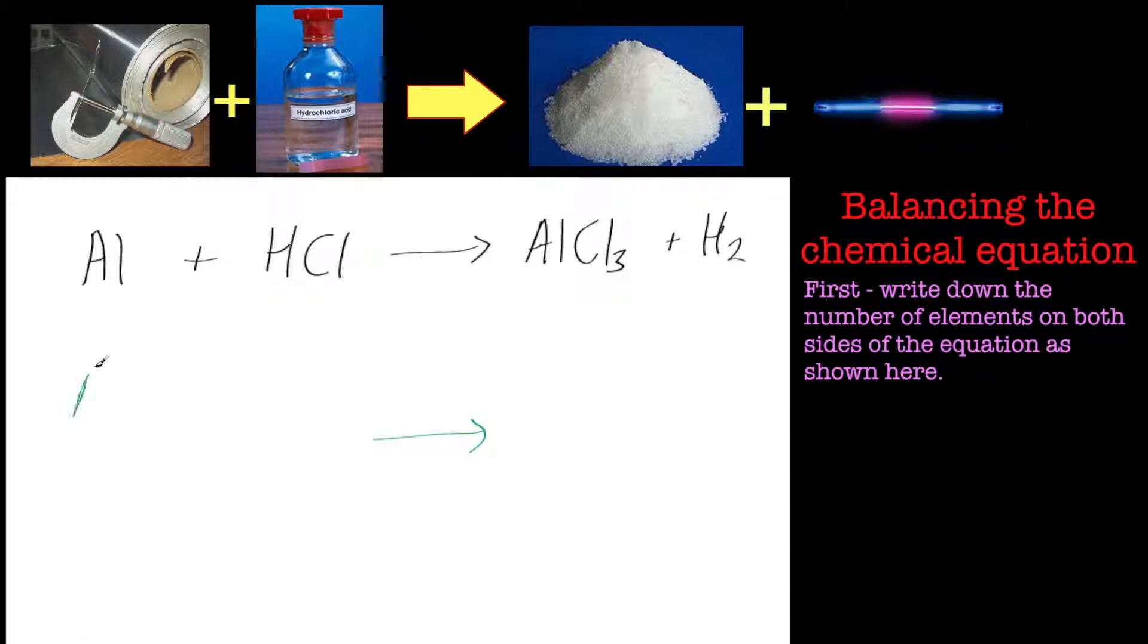So we've got aluminum, just one, one hydrogen, and one chlorine. Okay, so you've only got three elements on this side.